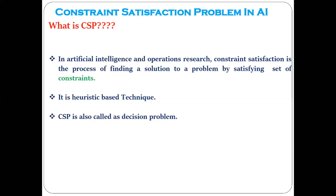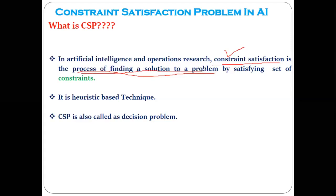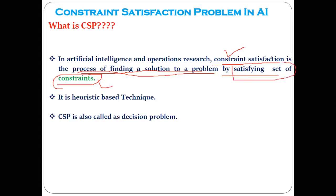First, let's understand what exactly is meant by the constraint satisfaction problem, and then we'll look at different real-world problems that fall under this category. In AI and operations research, constraint satisfaction is defined as the process of finding the solution to a problem by satisfying a set of constraints. A problem is considered solved only when certain constraints are satisfied.